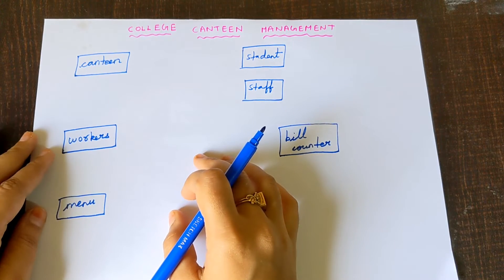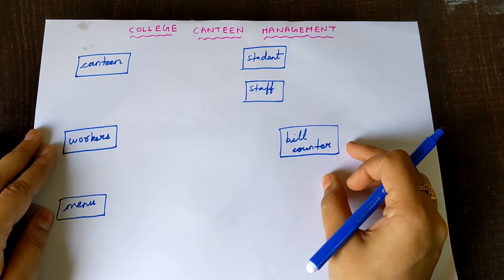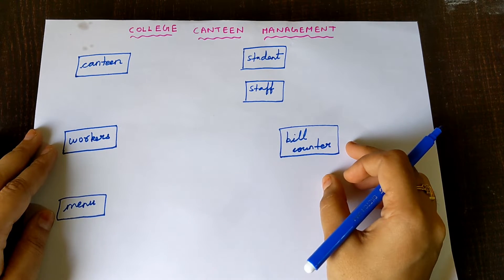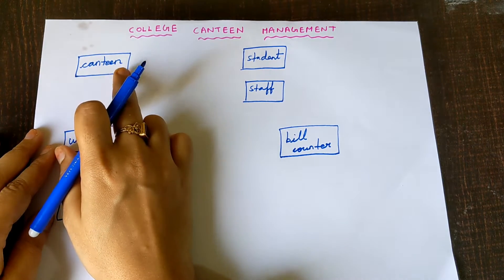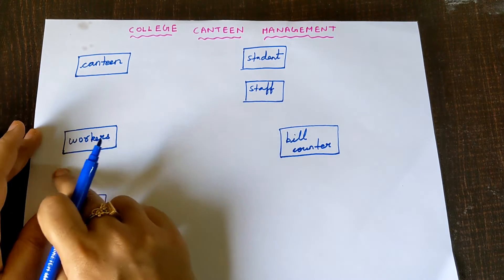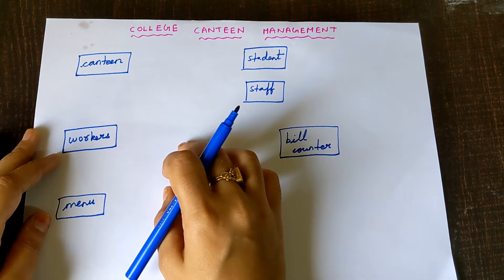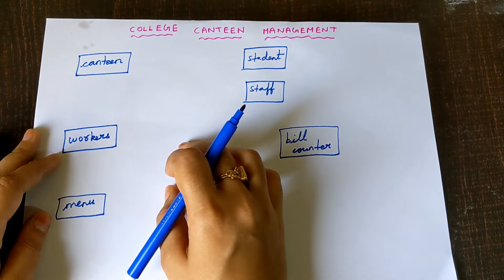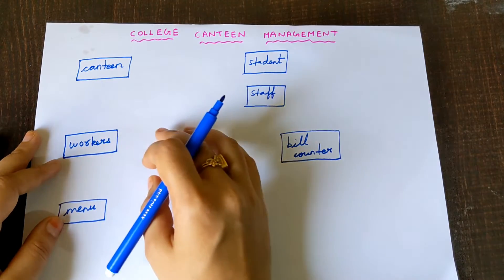The second step is we need to write the attributes for every single entity separately. An attribute is nothing but a characteristic of an entity. We must know that attributes must be written inside an oval shape. So we draw an oval shape and write the attribute name inside it.